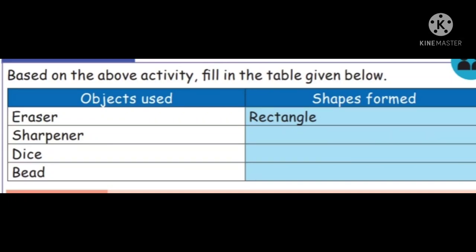Next, sharpener. Its impression we get rectangle also. And dice impression we get square. Bead impression we get circle.